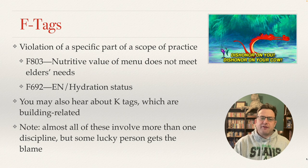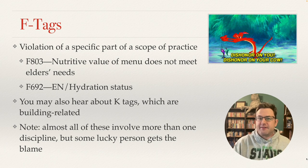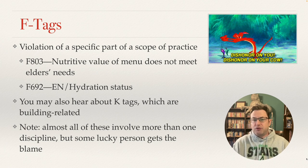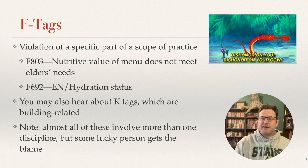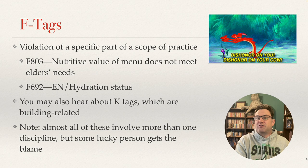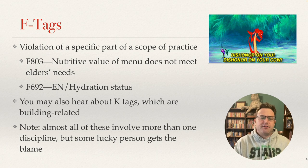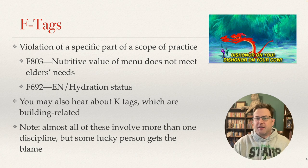Almost all of these involve more than one discipline. It's hard to pin down directly who's responsible for, say, an F692. Is it that the dietitian didn't assess needs correctly? Is it that the dietitian did the needs correctly but nursing staff did not follow through on the orders? Is it something else entirely? More than one team is frequently involved, but some lucky individual gets hit with the F-tag.